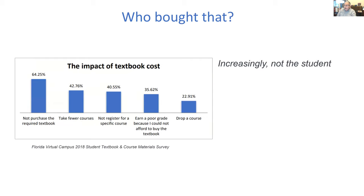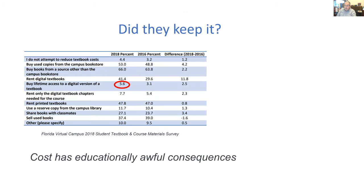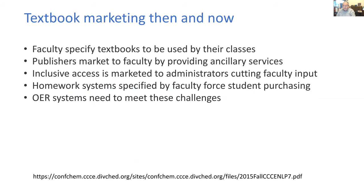The other half is: who bought it? And increasingly, that's not the student. And increasingly, it affects their grades. Students don't retain their textbooks — they sell them back, or if they're licensed rentals, it's only good for a semester. So now you're a chemistry student who took organic chemistry, and now you're taking the MCAT. What do you do? You're really up the creek. And I think increasingly, a lot of students are using OER. Cost has this terrible consequence.